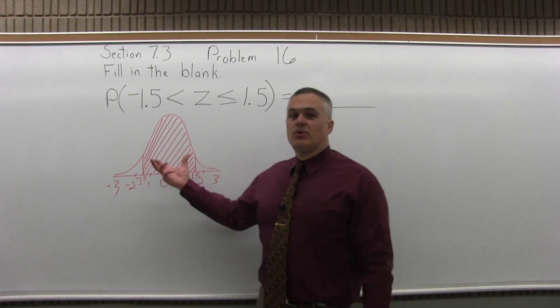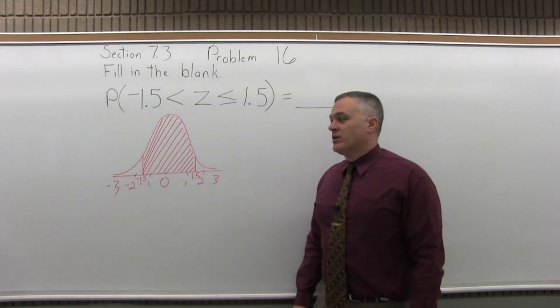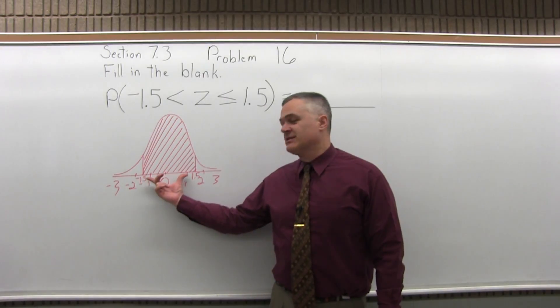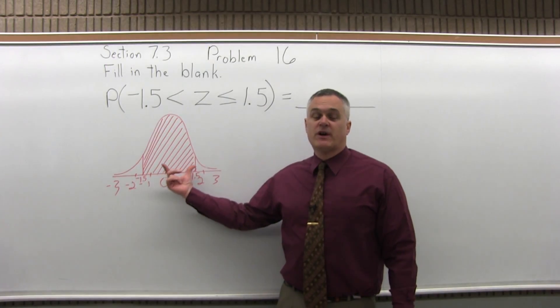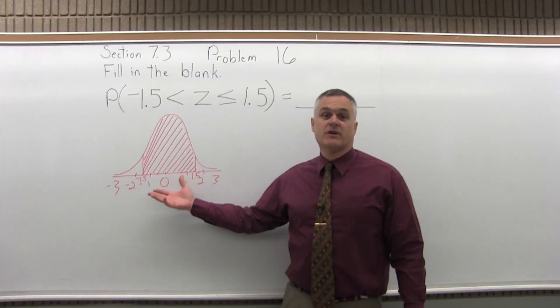So essentially, I want that middle portion of the bell curve. So what I have to do is look up both endpoints of that segment, negative 1.5, positive 1.5, get the two chart values and subtract.